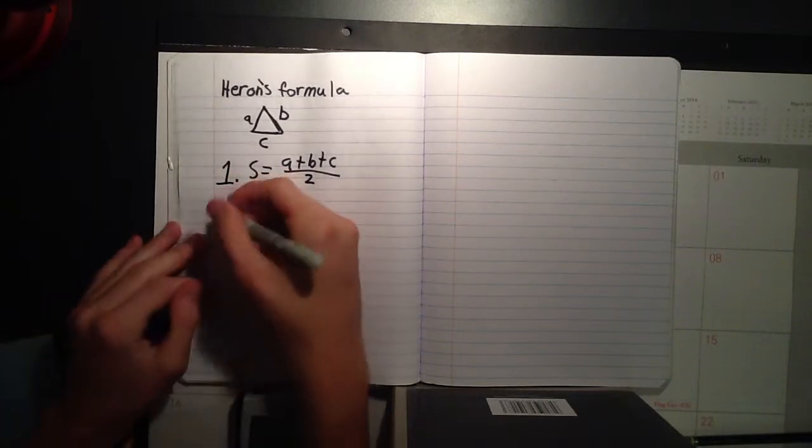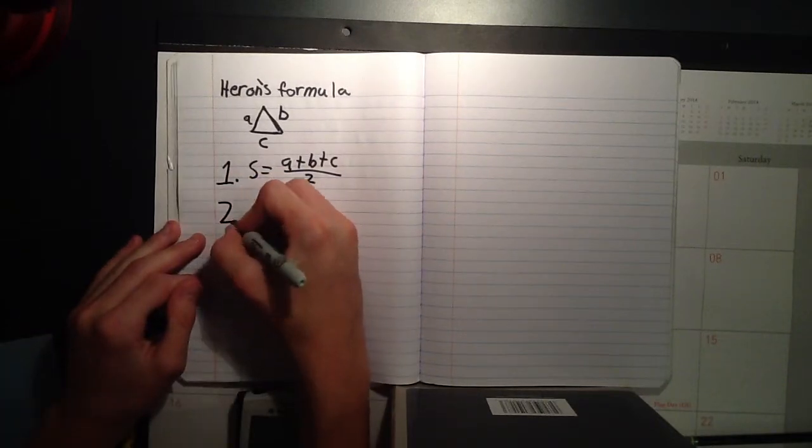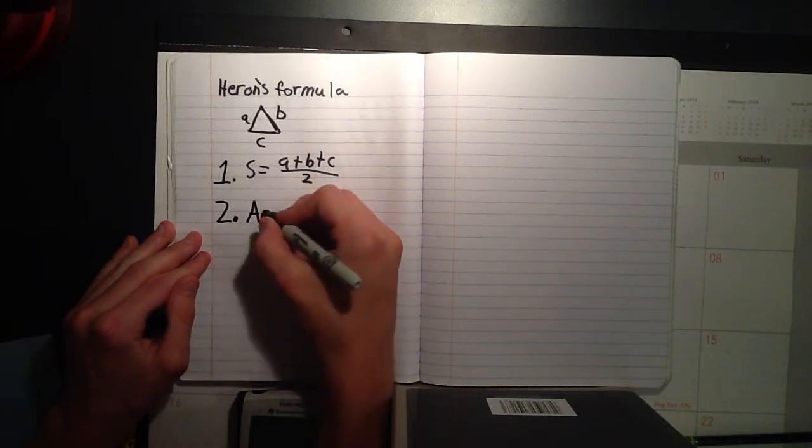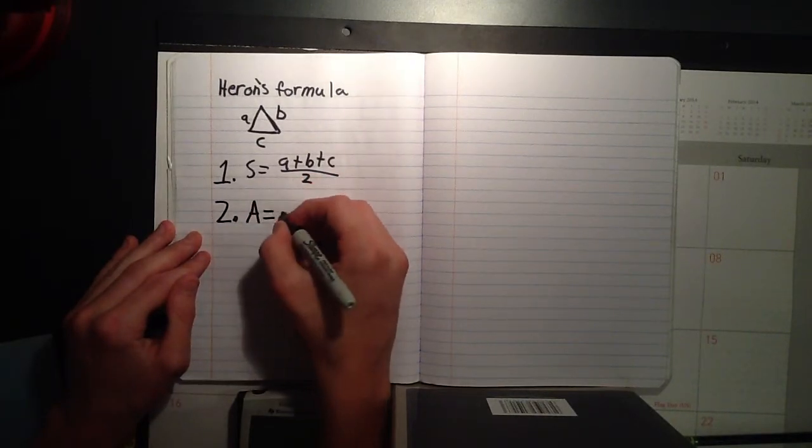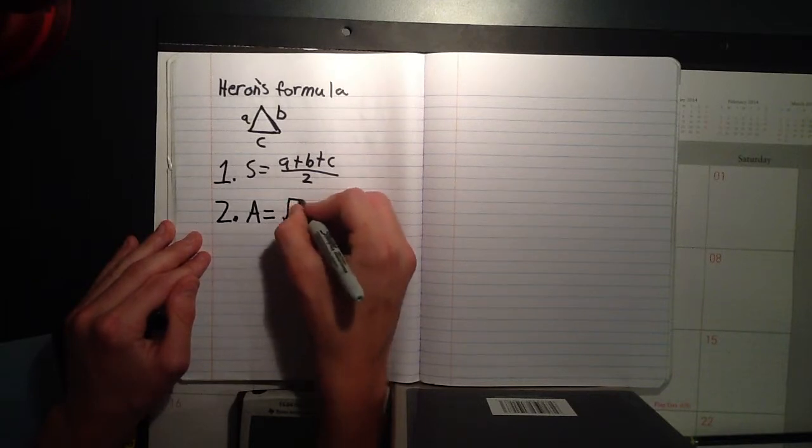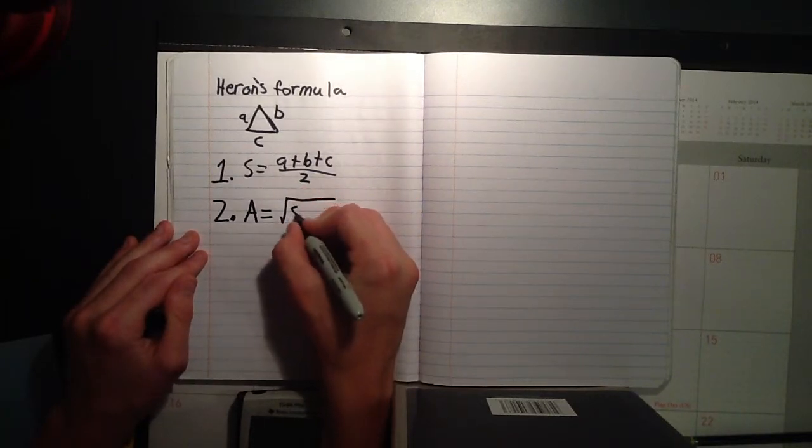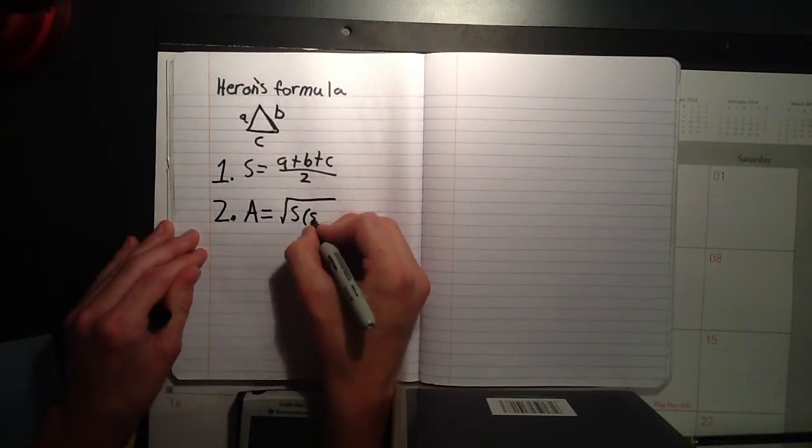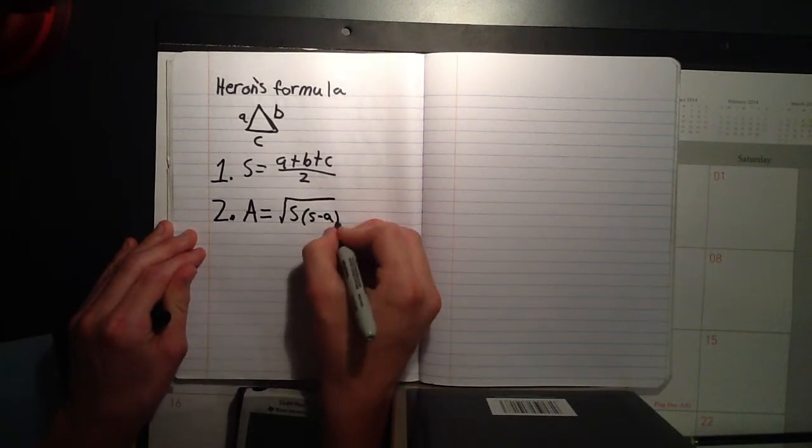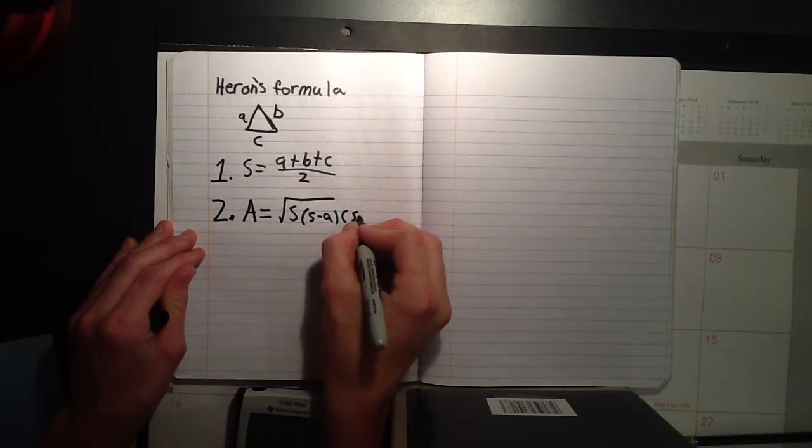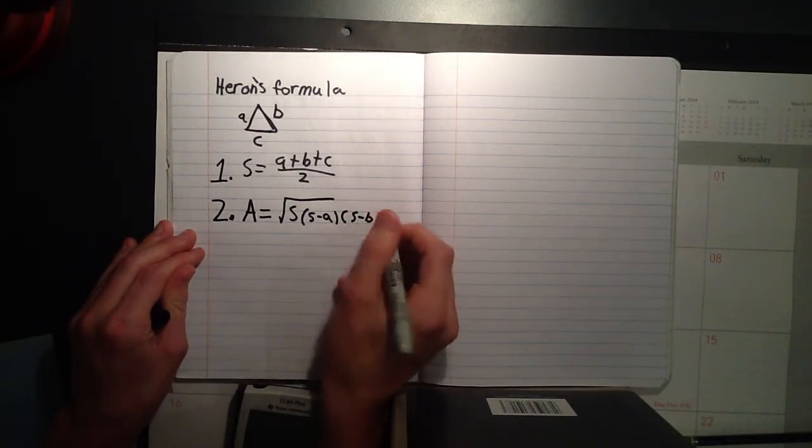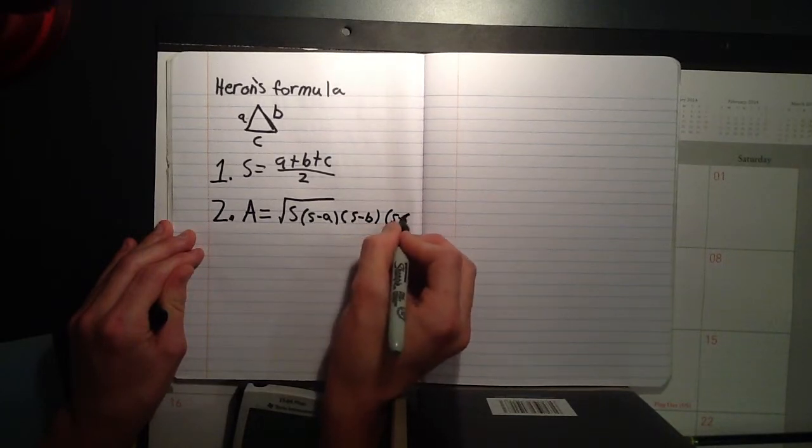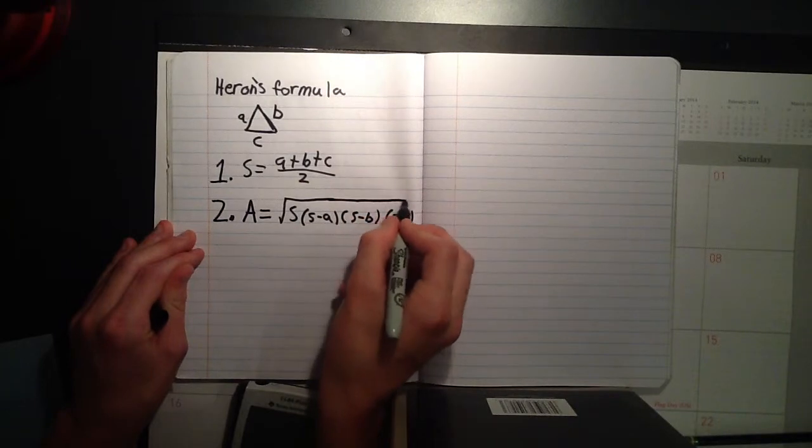So, after you've found that, you can find the area. Area is equal to the square root of S, which we just found, times S minus A, times S minus B, times S minus C.